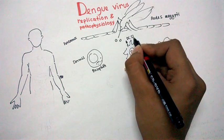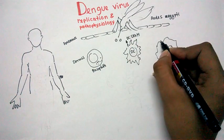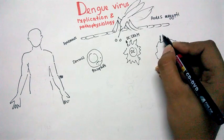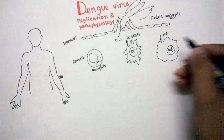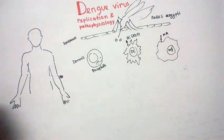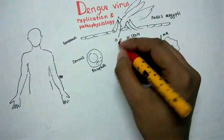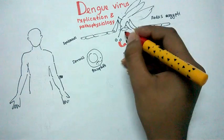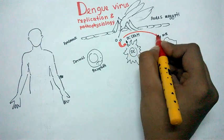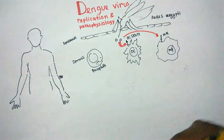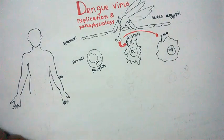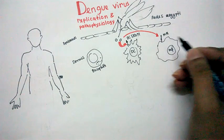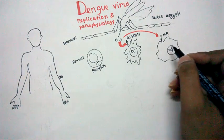This dengue virus will actually infect the dendritic cell or the macrophages. Dendritic cell has a particular type of cell receptor called the DC-SIGN and the macrophages has a particular type of receptor which are mannose type receptor MR. So this dengue virus can actually get inside the dendritic cell via either of these two receptors.